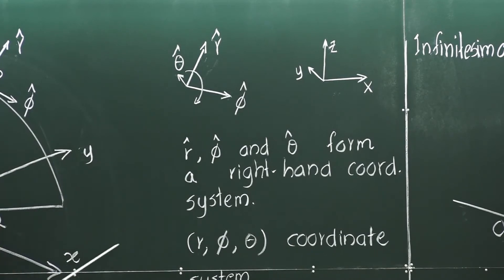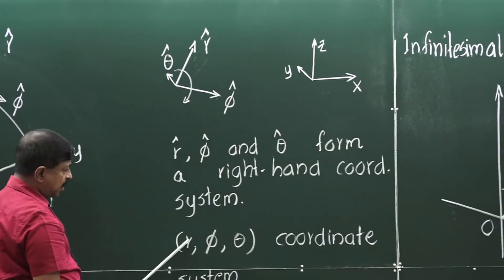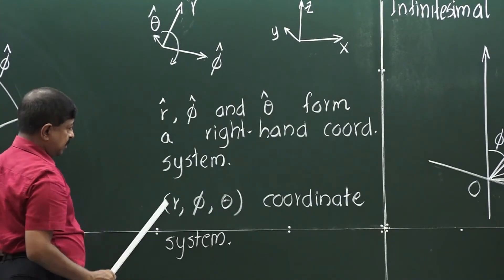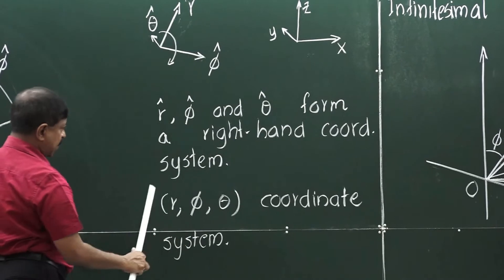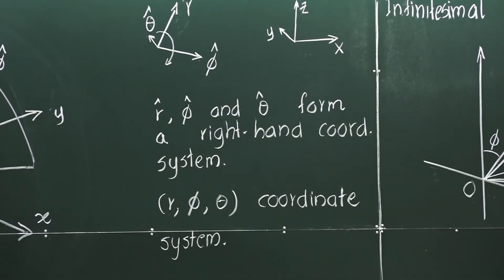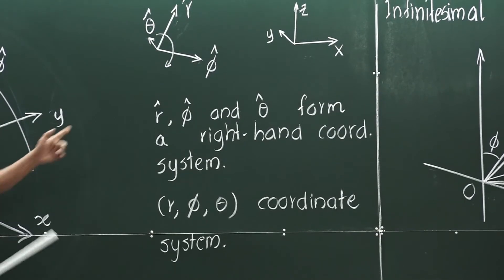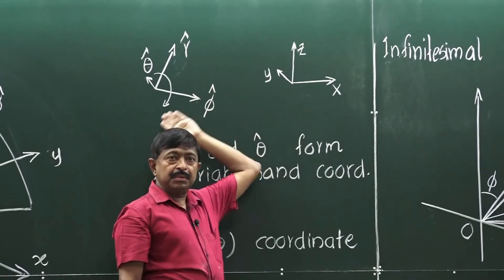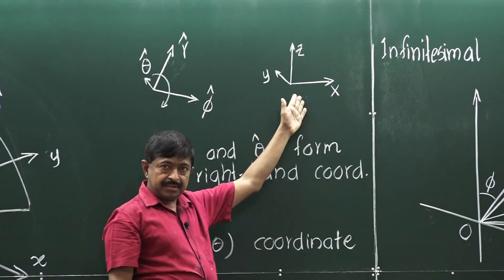Therefore we write it as r, phi, and theta — it is an r-phi-theta coordinate system. R is the first coordinate, phi is the second, theta is the third, and you have the similar orientation.